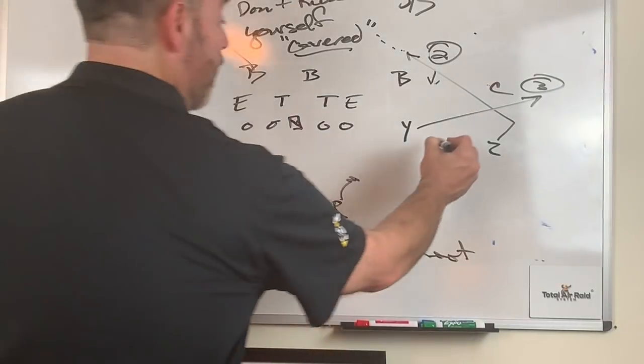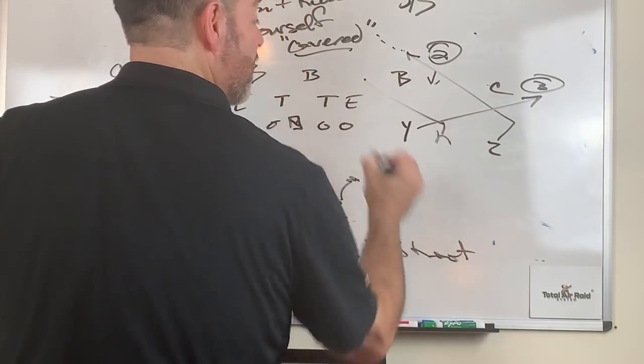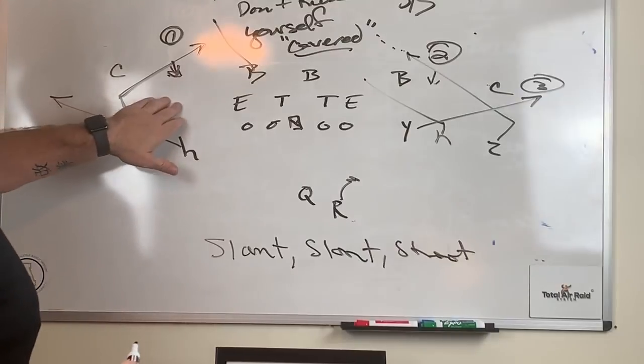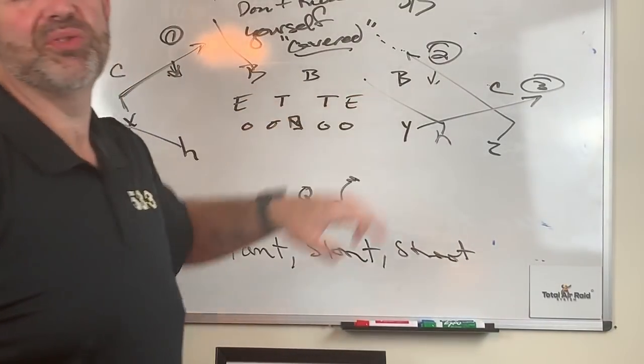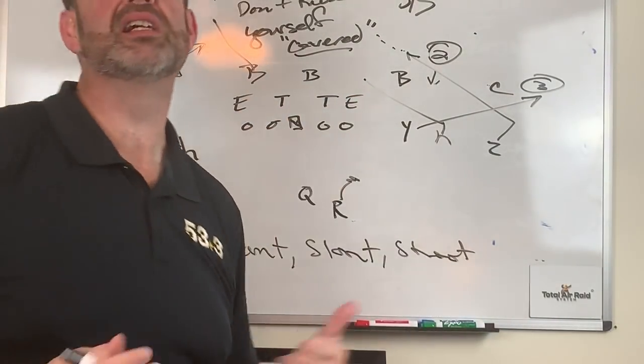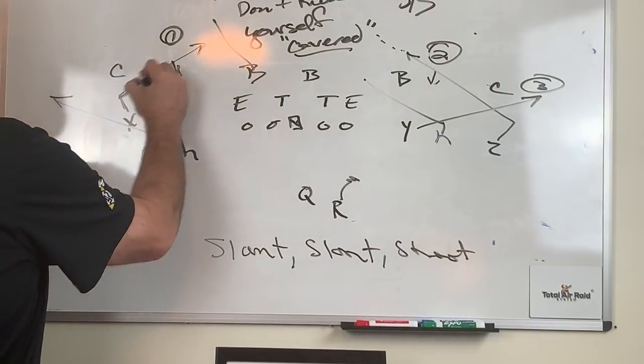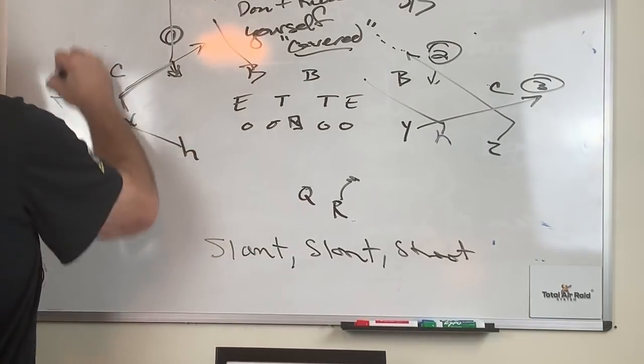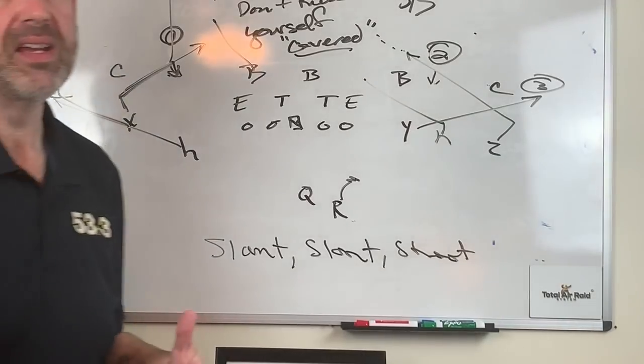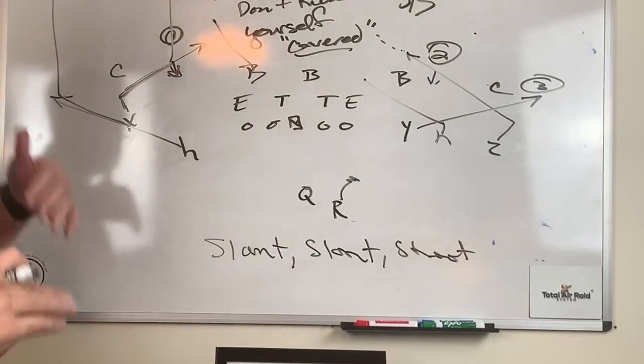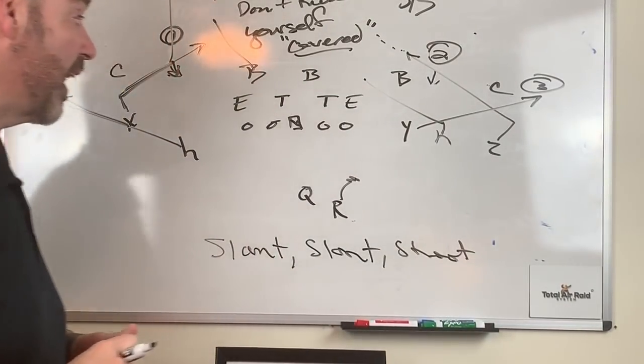If we go three by one, we'll double slant and it will still work backside. We generally don't throw the inside slant, we let that be the clear out. Now what's a little tag off of that? Obviously we can run sluggos and we can run wheels off of that. So 65 sluggo or 65 wheels is not a bad little gig on that.